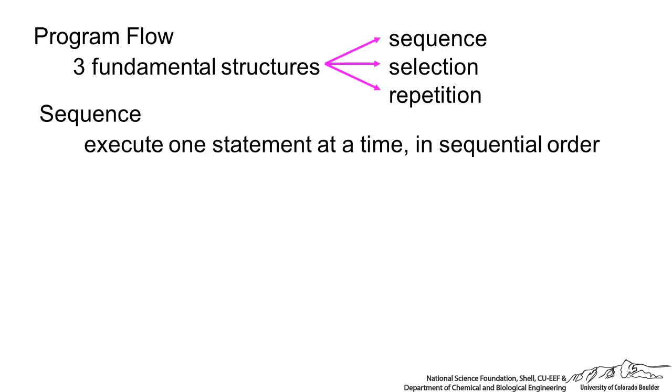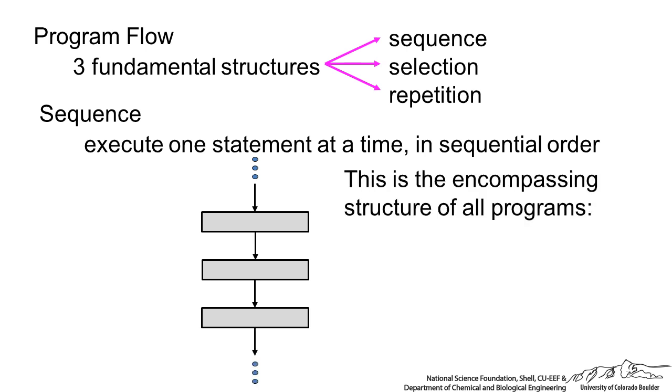Sequence is very simple, it is straightforward, executing one statement at a time in sequential order. So when we actually record a macro, this is what we are doing - we are doing sequential flow where we format a cell, add a label, and so on. This is the encompassing structure of all programs, so all programs have some sort of sequential flow, begin to end, and then what goes on in the middle is sequential.